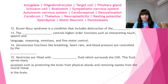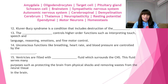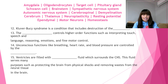Number fourteen: unconscious functions like breathing, heart rate, and blood pressure are controlled by the blank. What controls breathing, heart rate, and blood pressure? The answer for number fourteen is the brainstem. The brainstem controls breathing, heart rate, and blood pressure.